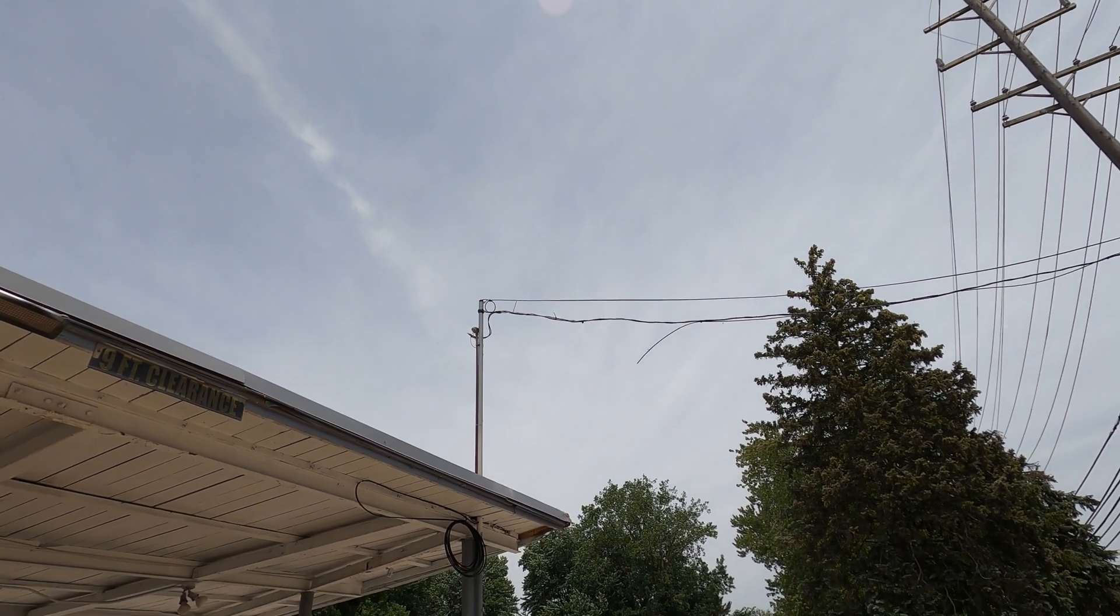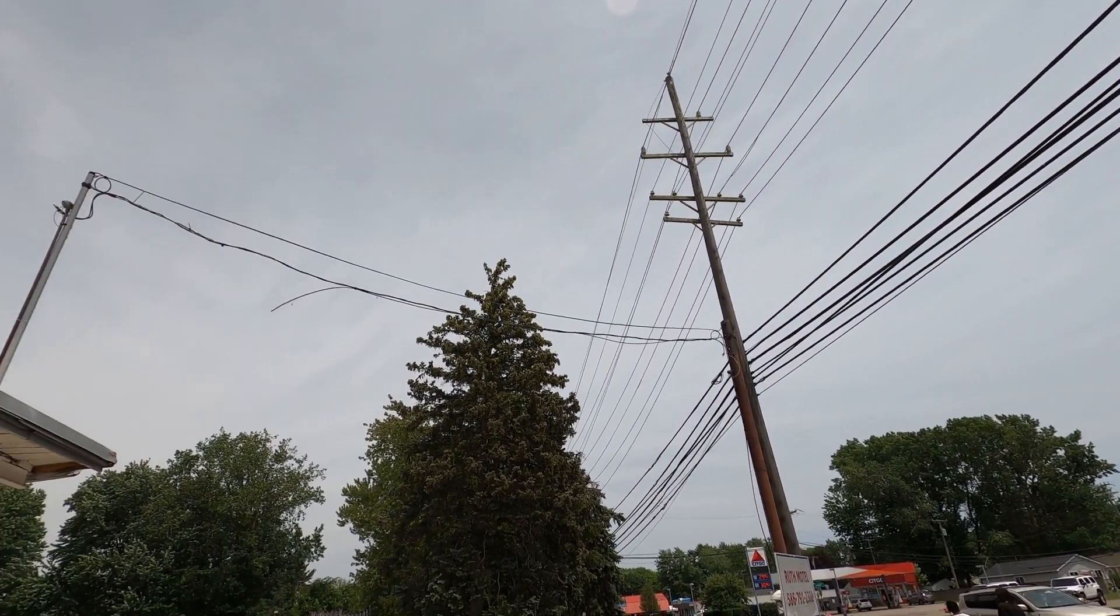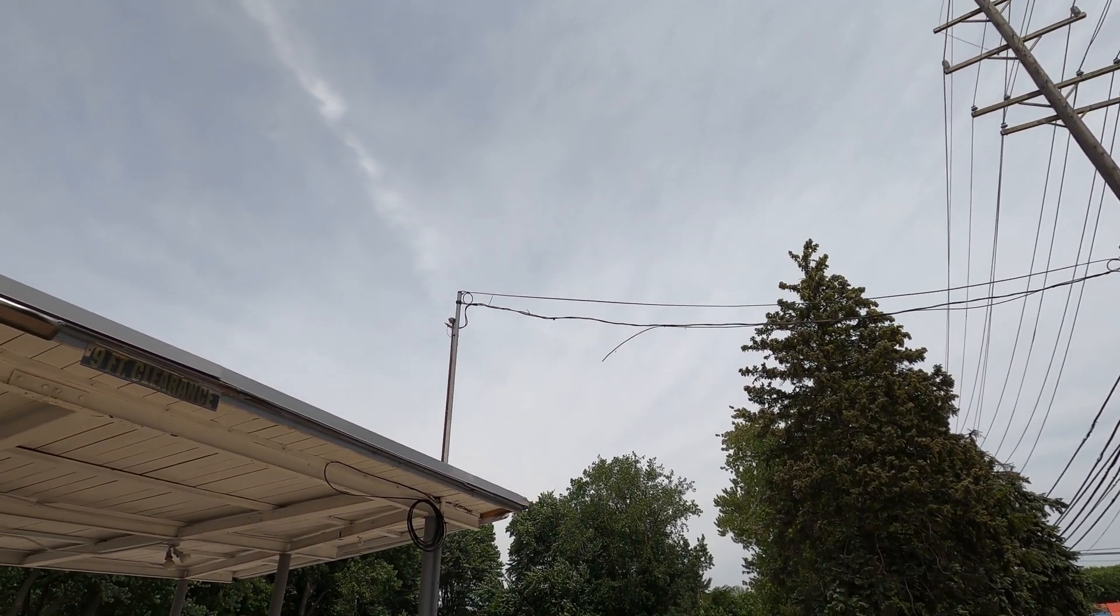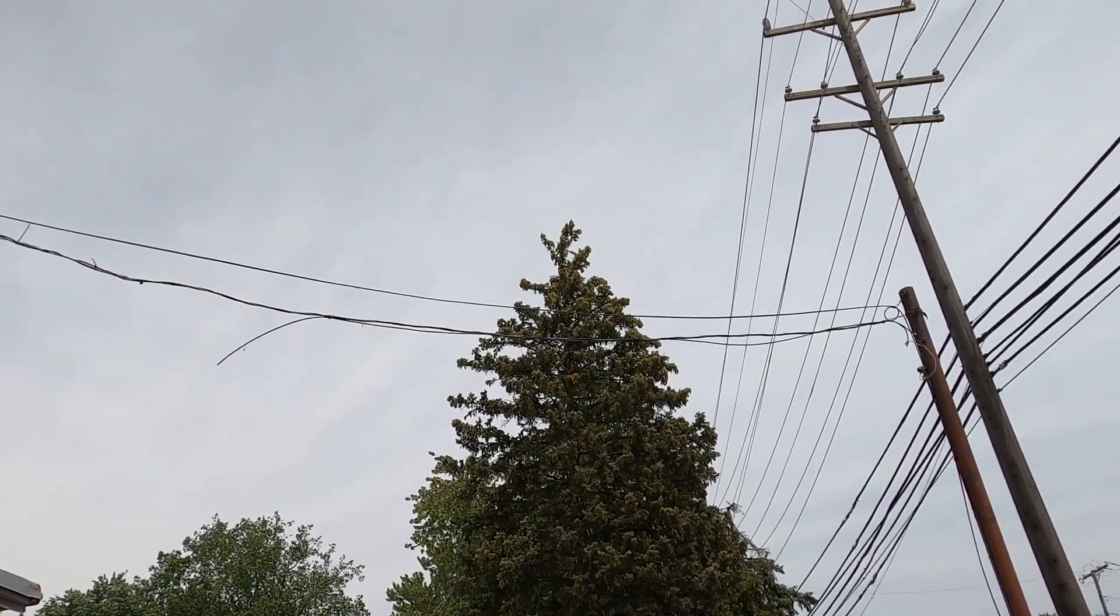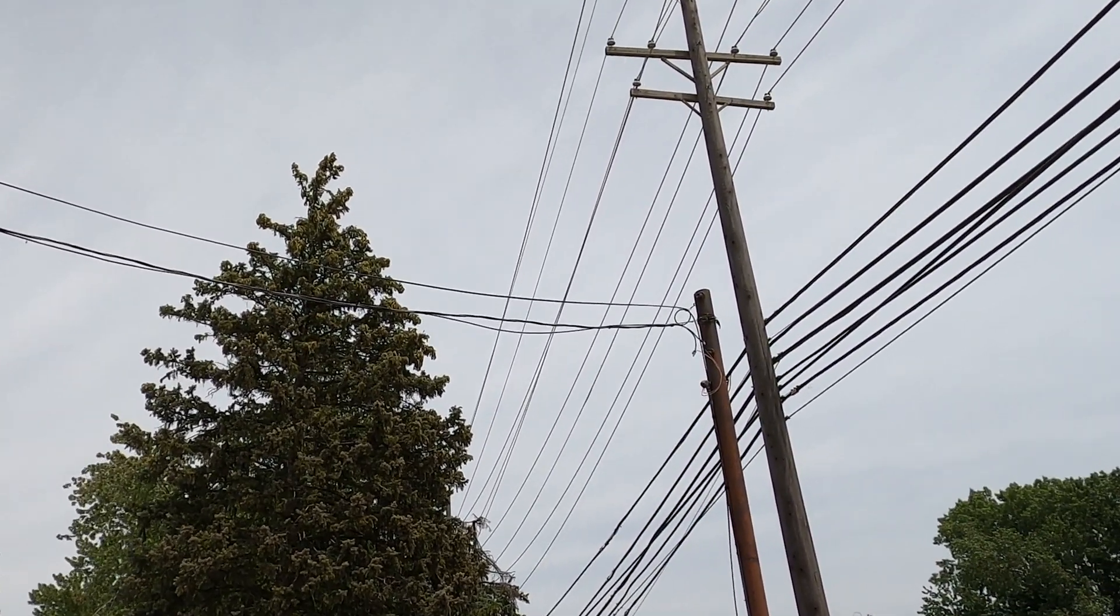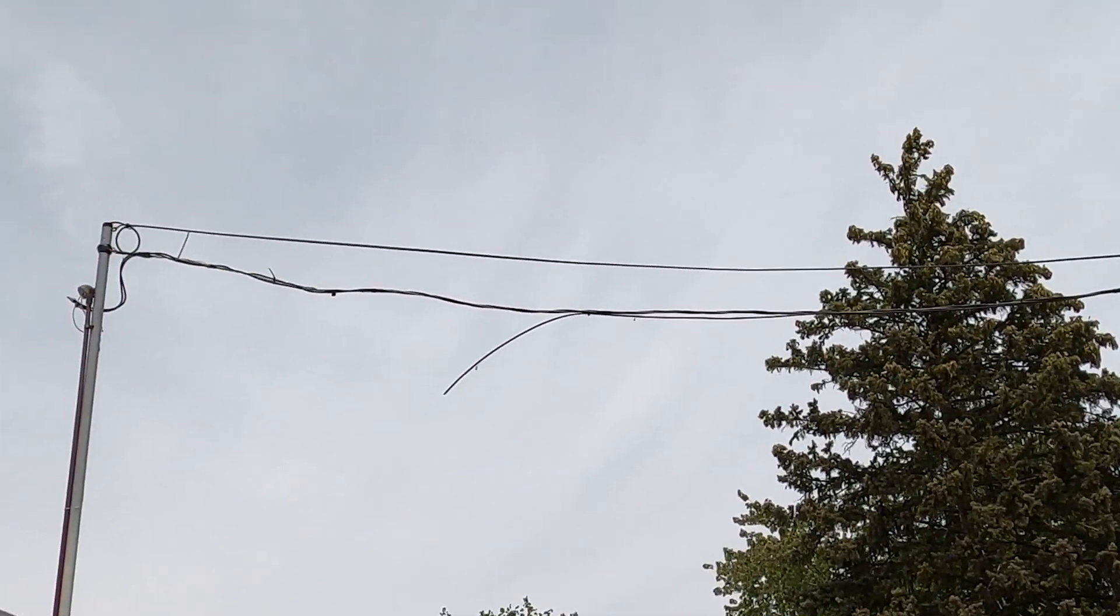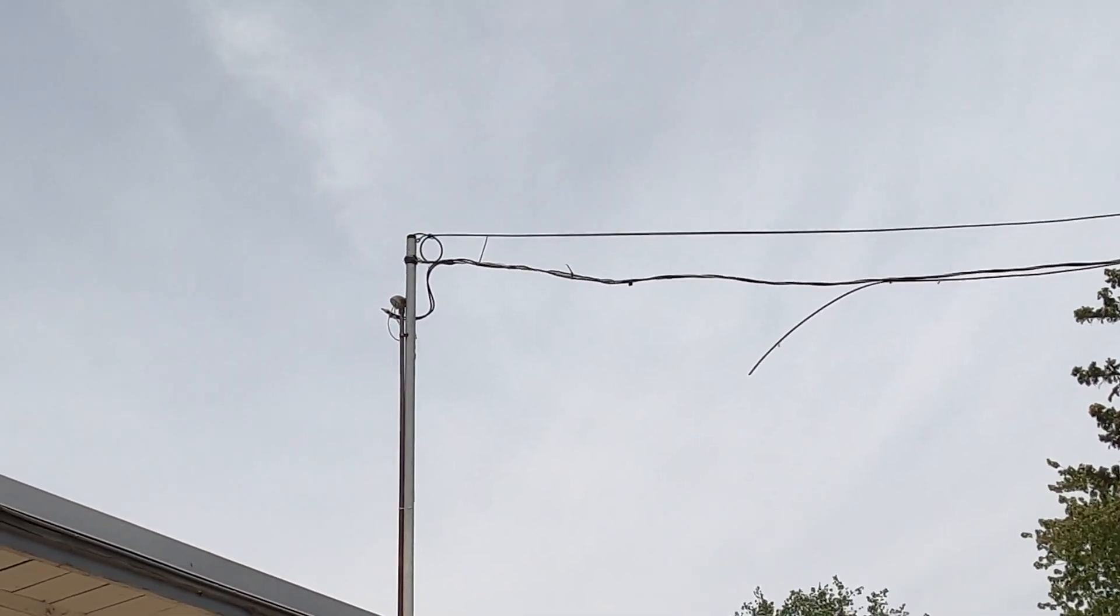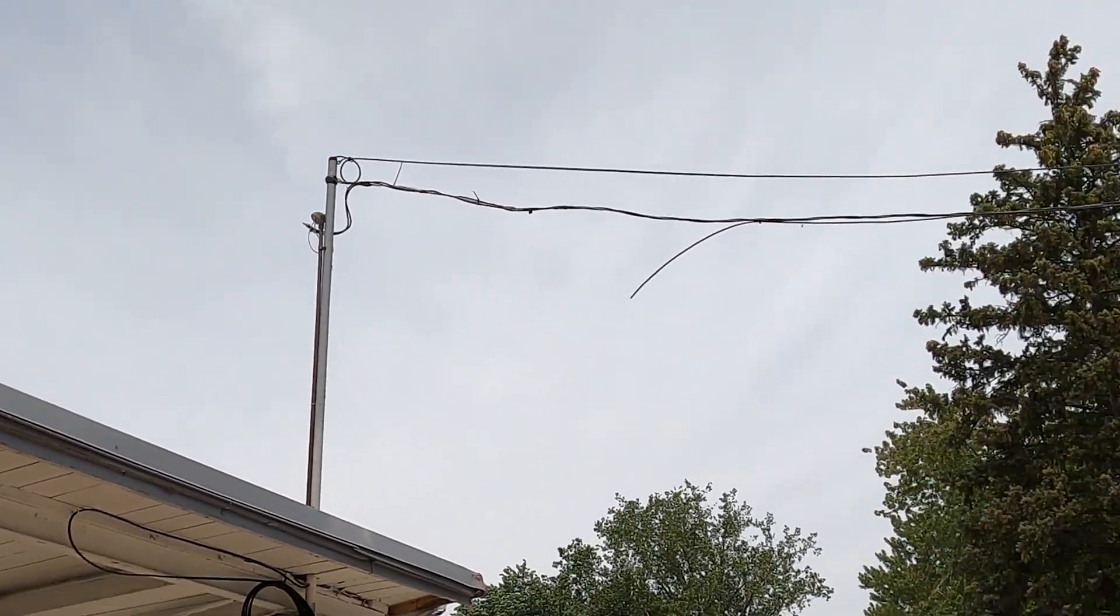So there it is, the completed messenger run going from pole to pole all attached. And if you'll notice, there's an electric wire several inches below the shielded ethernet, which is critical to have shielded ethernet and maintain at least a two inch separation. But I decided to take it safe and I've got about a six to eight inch separation going there. So that's pretty much it.